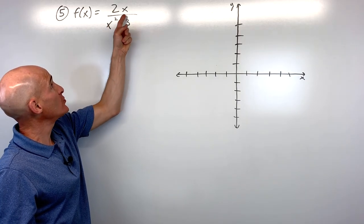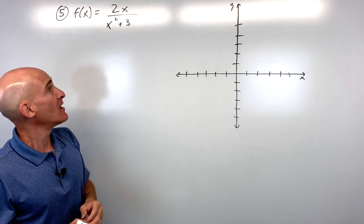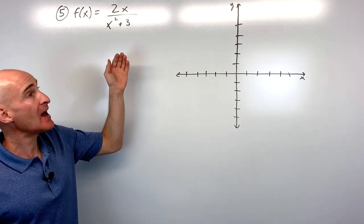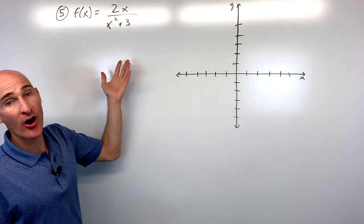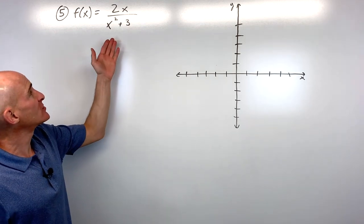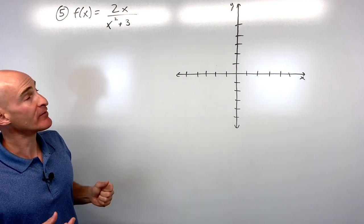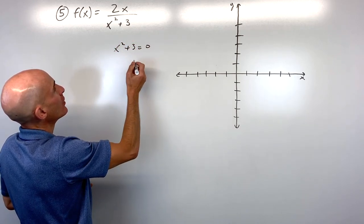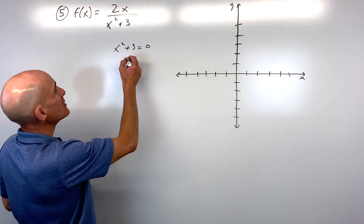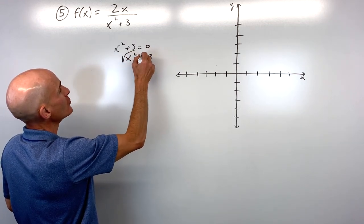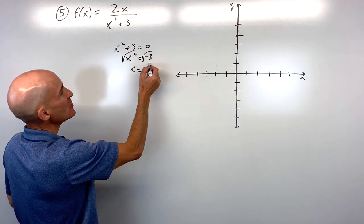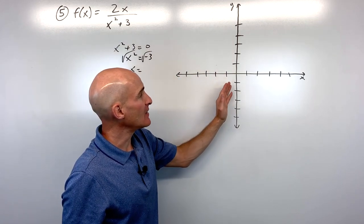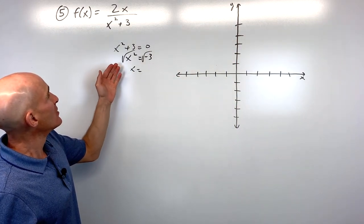Problem 5: f(x) = 2x/(x²+3). It can't be factored. For vertical asymptotes, set x²+3=0: x²=-3, which yields imaginary numbers. So there are no vertical asymptotes. The degree of the denominator (2) is higher than the numerator (1), so the horizontal asymptote is y=0.